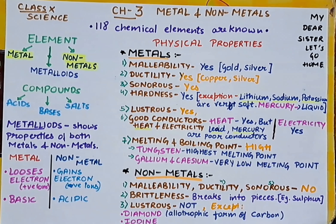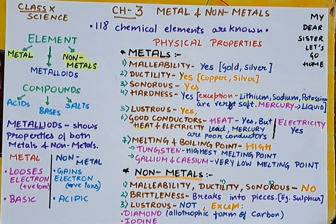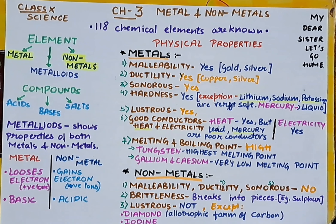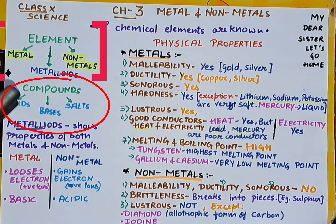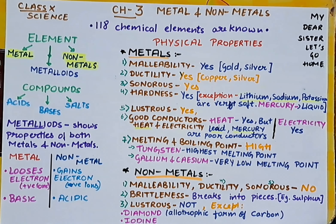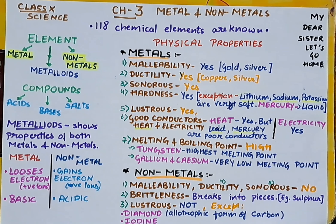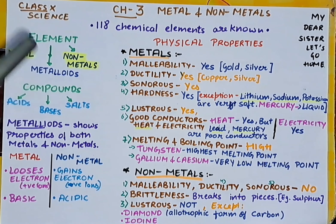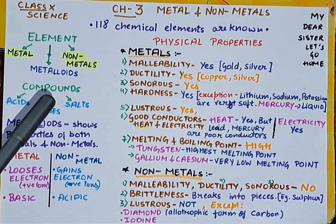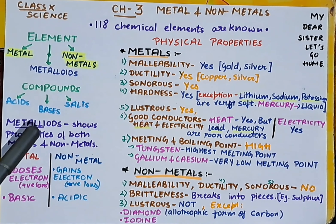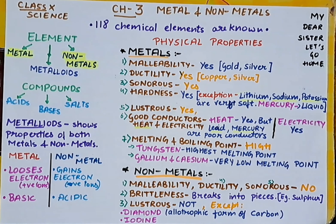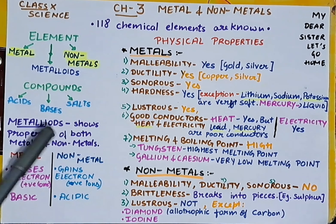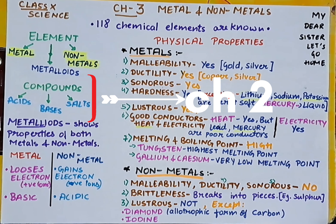At present there are 118 chemical elements that are known. We have two things: elements and compounds. Elements are further classified into three things: metals, non-metals, and metalloids. Compounds are classified into three branches: acids, bases, and neutral salts. We discussed compound classification in Chapter 2.